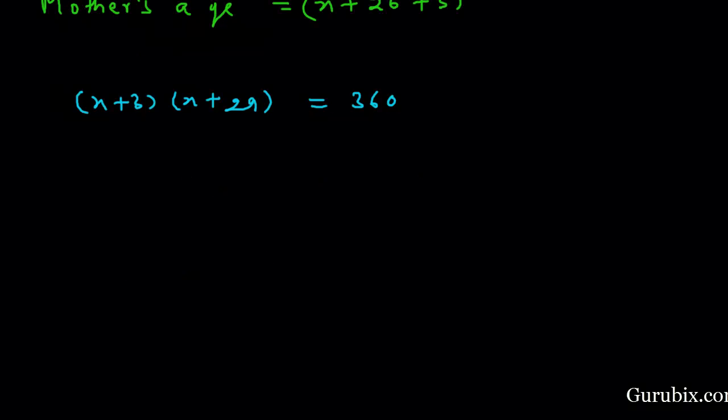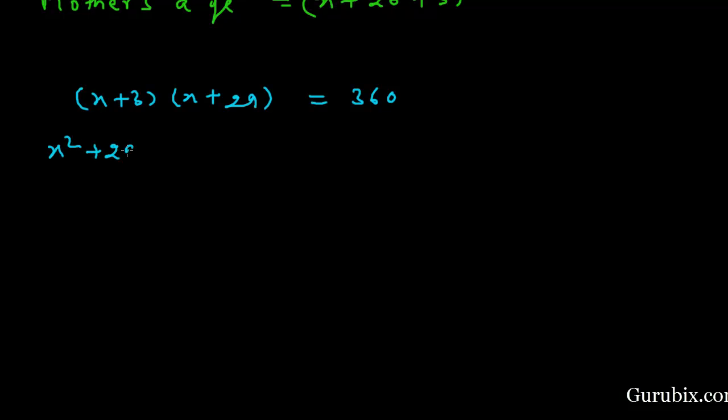Now we shall solve this equation for X. First, we shall multiply these two binomials. Then we have X square plus 29X plus 3X plus 87 equals 360. This equals X square plus 32X plus 87 minus 360 equals 0.